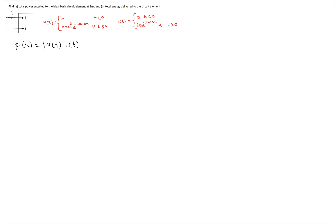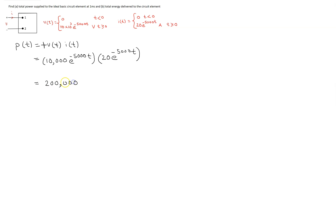Once we have done this, we can substitute the values and simplify. The voltage is 10,000 e raised to the power minus 5,000t, and the current is 20 e raised to the power minus 5,000t. The magnitudes multiply and the exponents add, giving us 200,000 e raised to the power minus 10,000t watts. This is the expression for the instantaneous power at any given time.